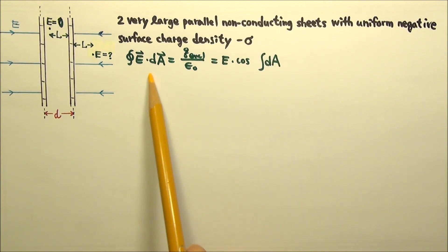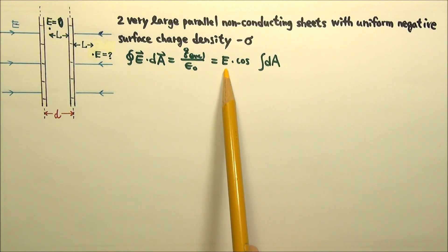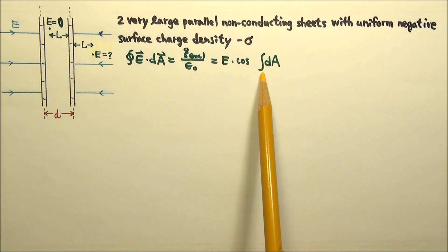When we use Gauss's law to find the electric field, we need to make a Gaussian surface that goes through the location we're interested in. And we need E and cosine to be constants, so we can take them out of the integral.